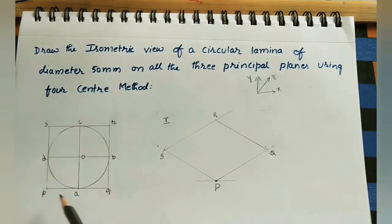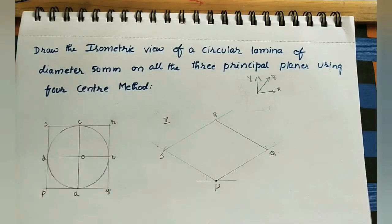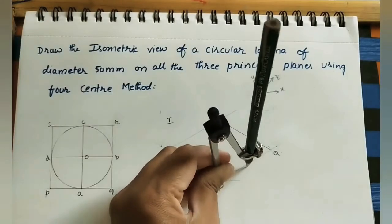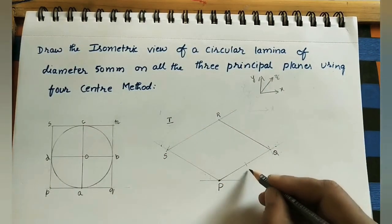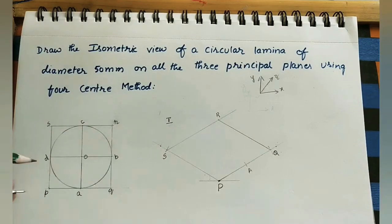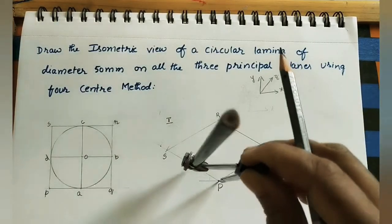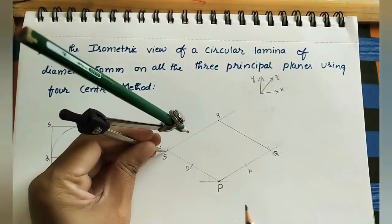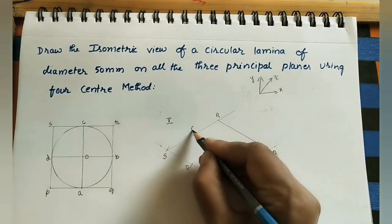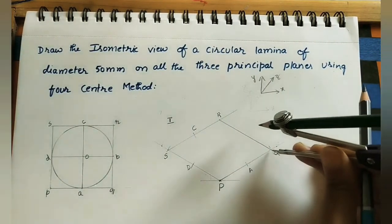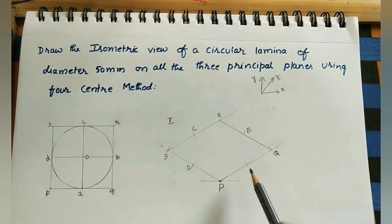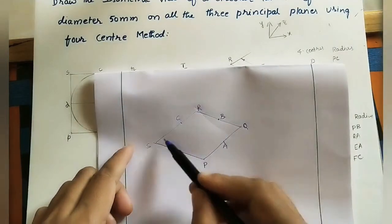After completing the rhombus, mark the midpoints. Using a compass, take the PA length and mark it on PQ - this midpoint is A. Take the same length on PS - the midpoint is D. With S as center, mark the arc to get point C on SR. With QR center, mark point B on QR. So we get all four midpoints A, B, C, D on the sides of the rhombus.